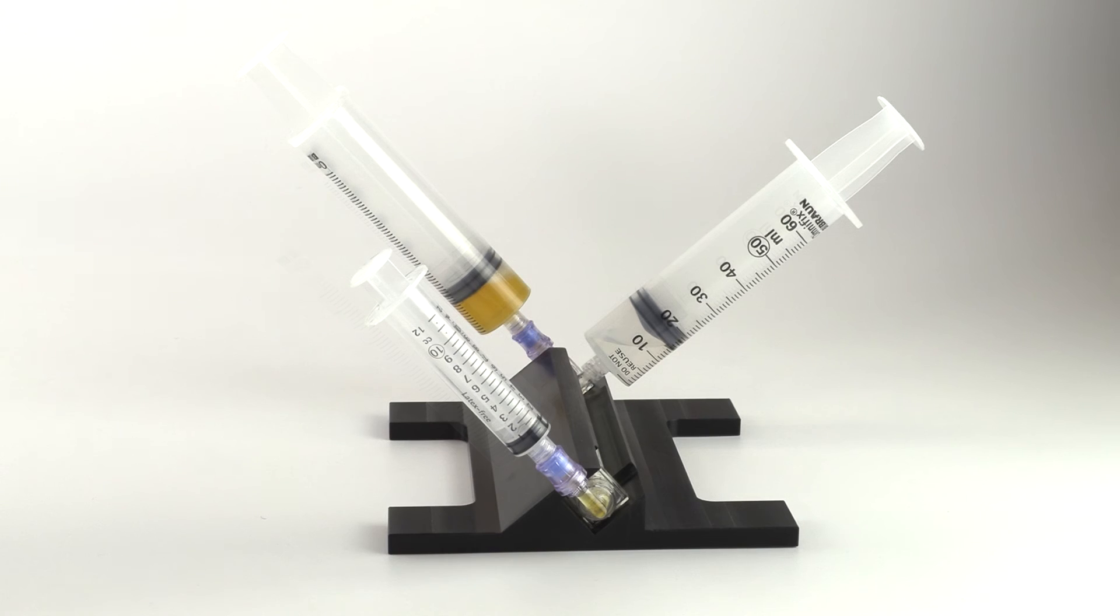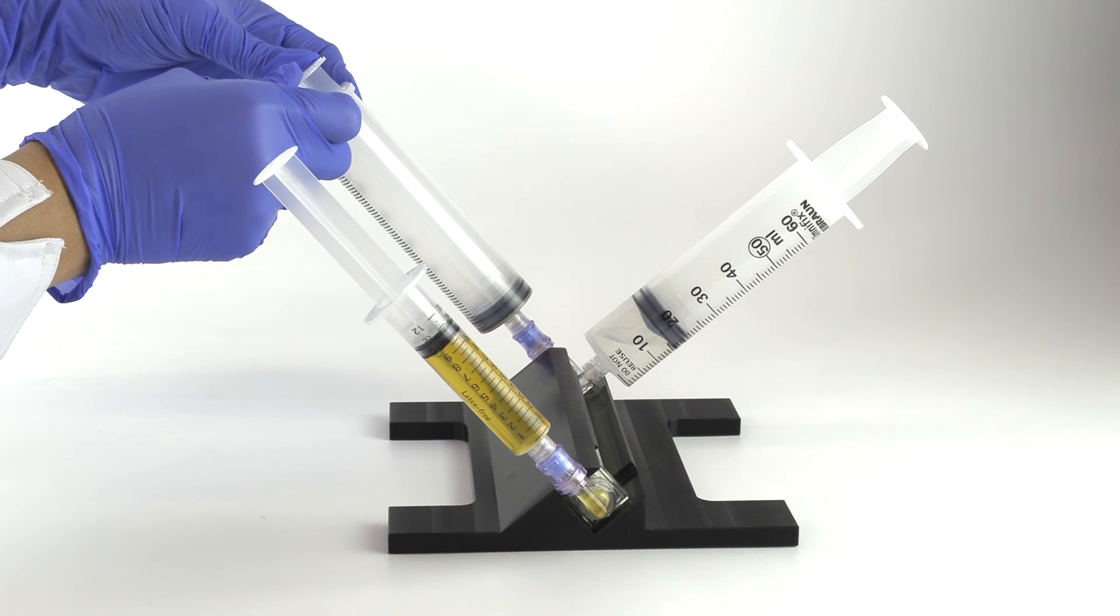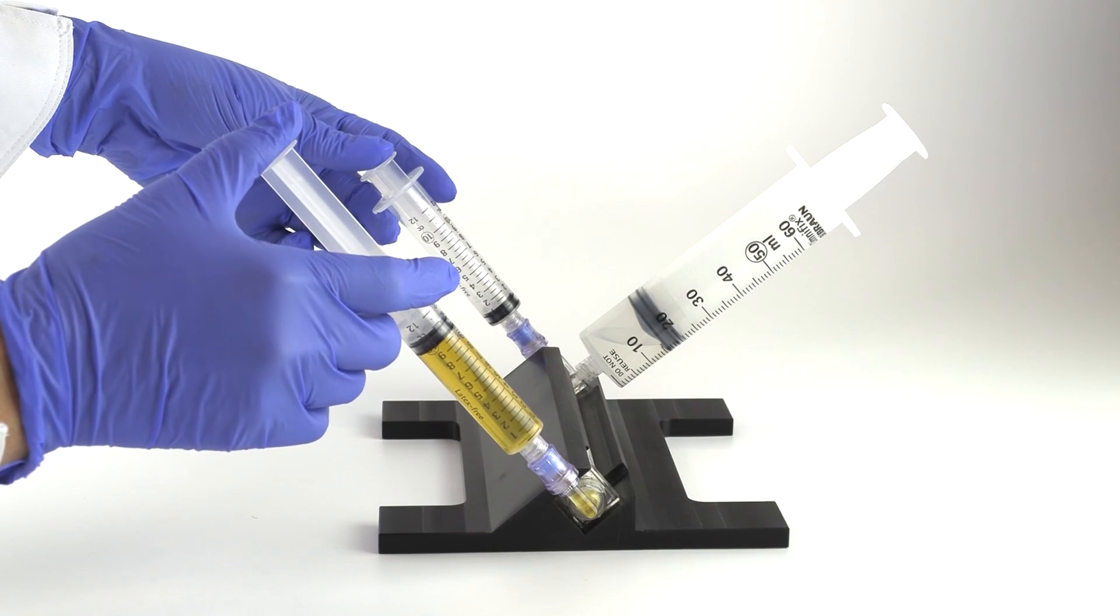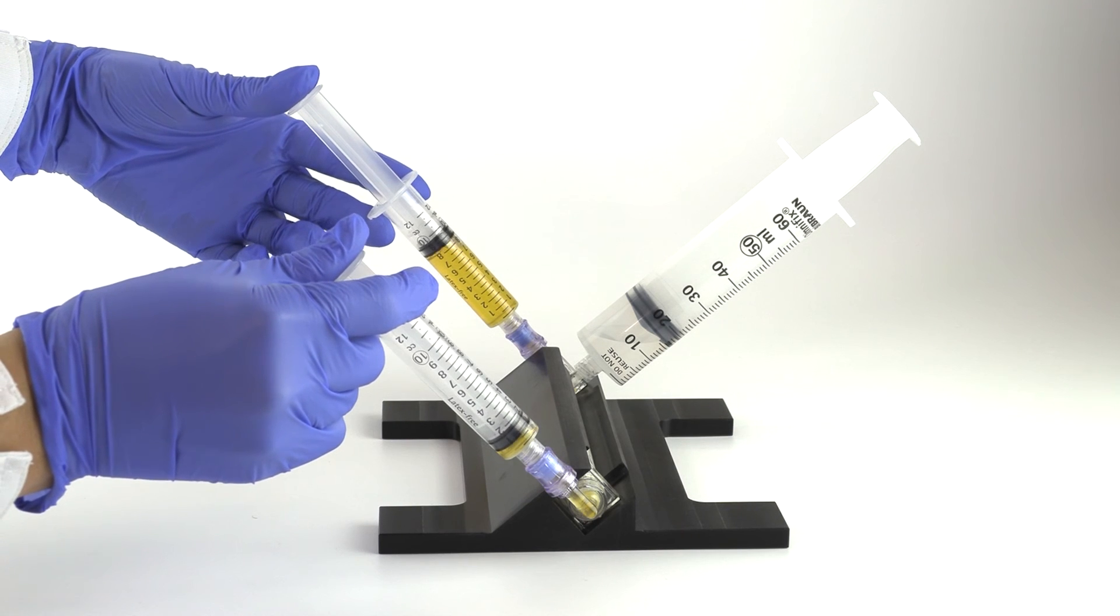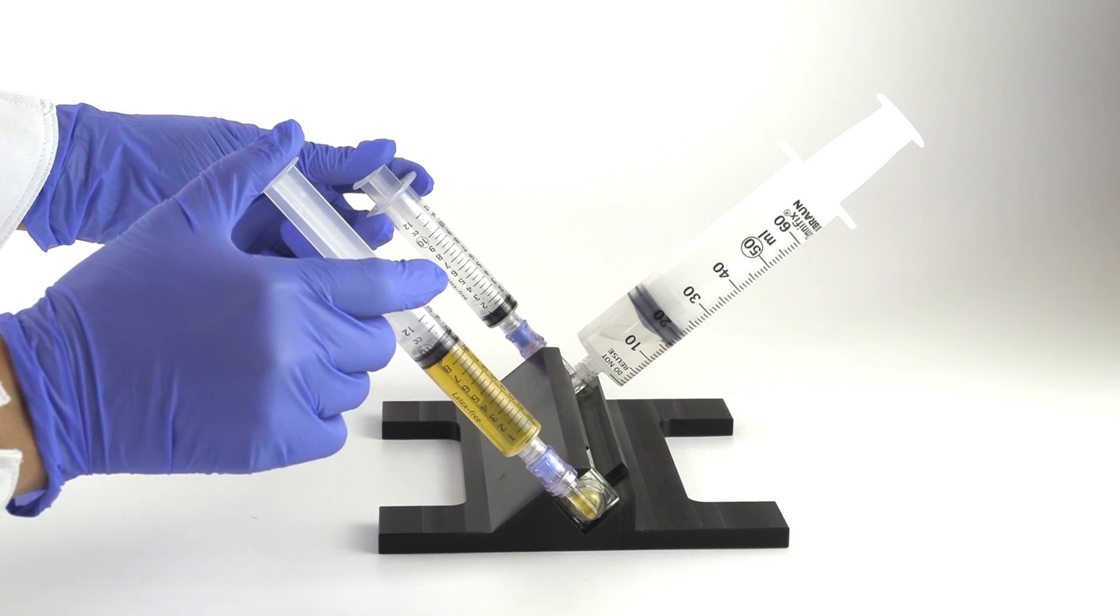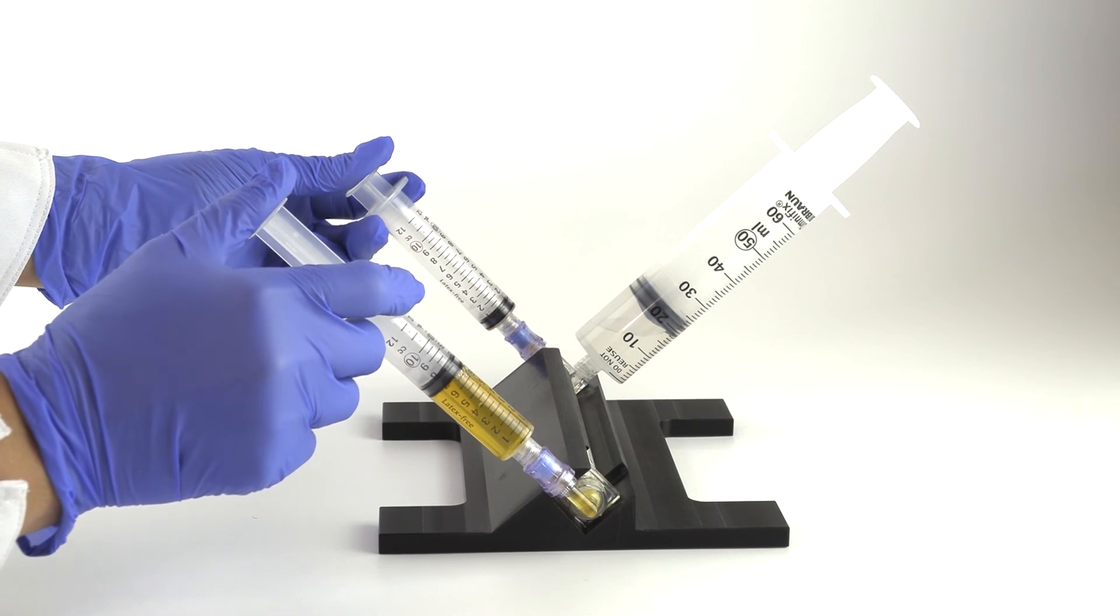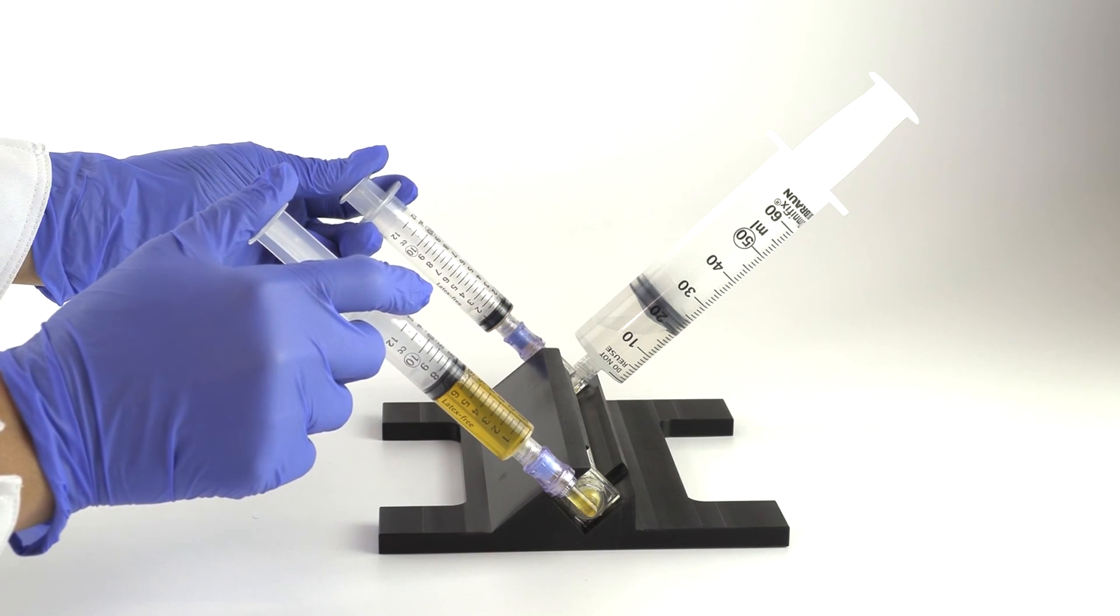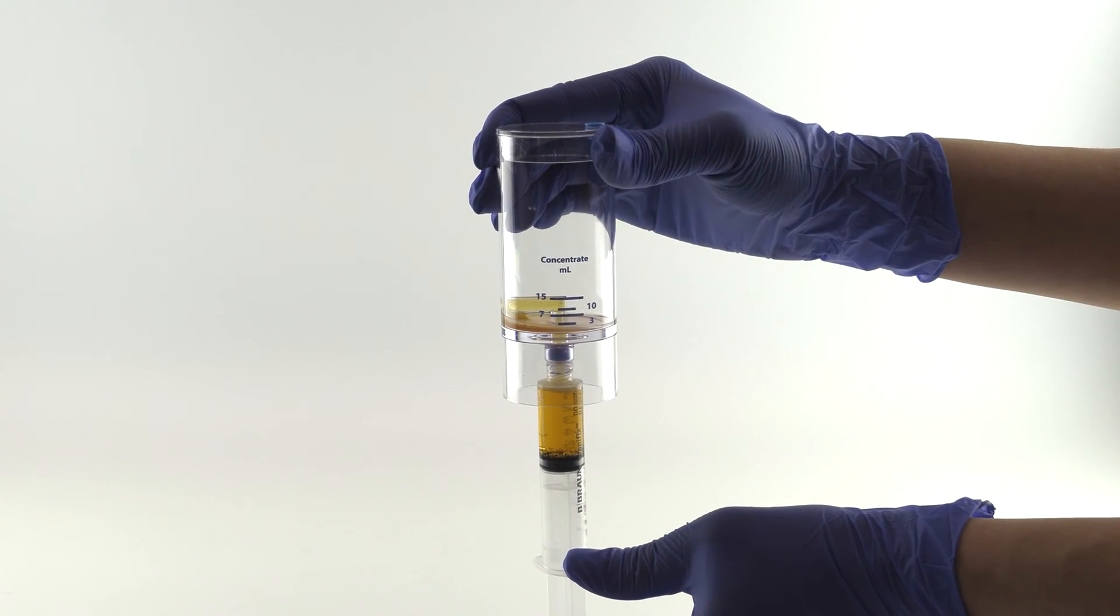Replace the 60 or 30 milliliter syringes with 12 milliliter syringes as shown. Then inject the plasma protein concentrate into the concentrator device.